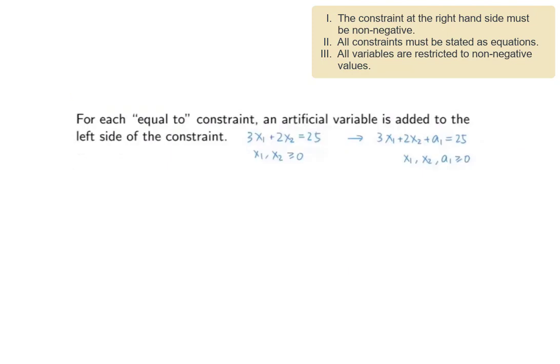Similar reasons apply to the situation when we have an equality constraint. Then an artificial variable will also be added to the left-hand side of the constraint. So if we have 3X1 plus 2X2 equals 25, where X1 and X2 are greater than or equal to zero, then we will add an artificial variable A1 into the left-hand side to make this an equality, where all variables are greater than or equal to zero.